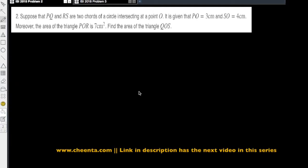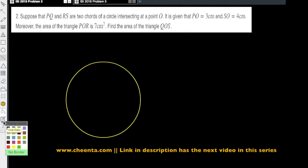This is the second problem from ISI 2018 and we start with a circle, a circle which has two chords, P and Q. So let's draw two chords, suppose I use a white one here. This is P, Q and this is R, S.